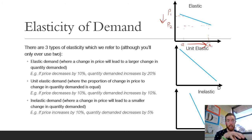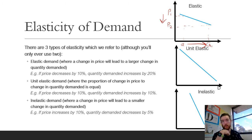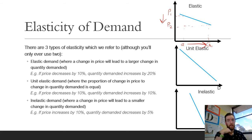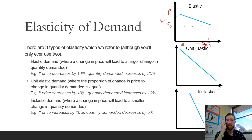Then we've got unit elastic demand, which is where the proportion of the change in price is equal to the change in quantity demanded — that's a 45-degree line. For example, price decreases by 10%, quantity demanded increases by 10%. So if the price goes down from $10 to $9, quantity demanded goes up from 100 to 110.